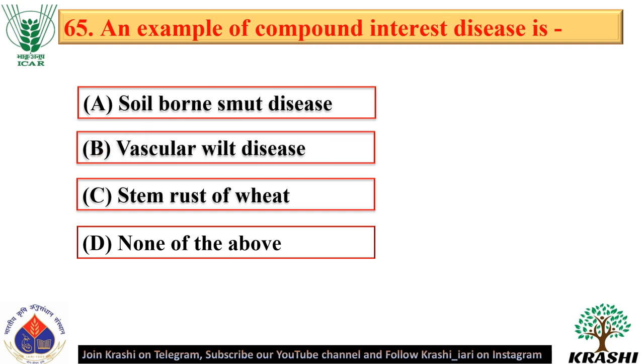Question number 65. An example of a compound interest disease is stem rust of wheat — option C.